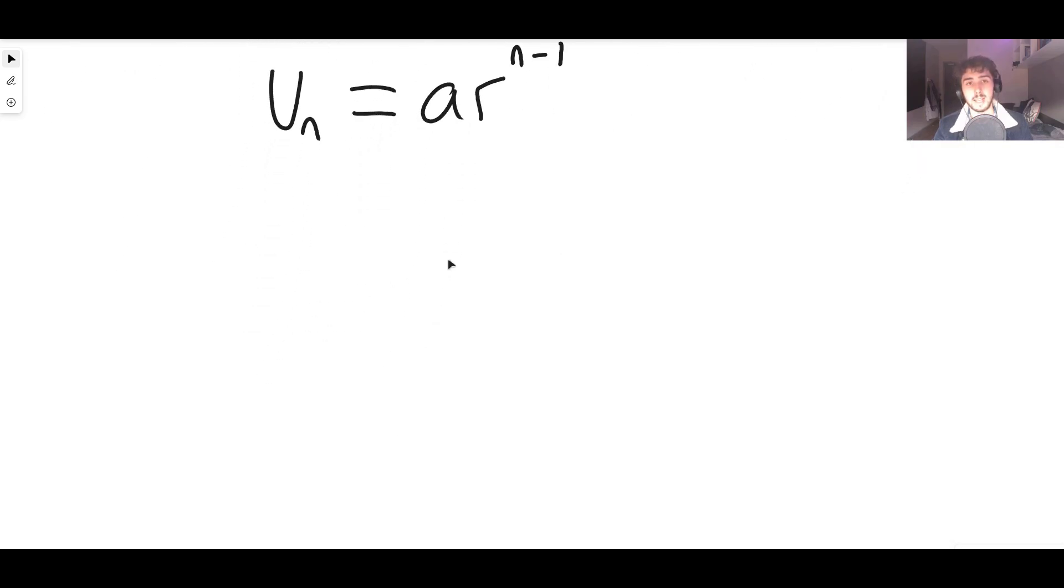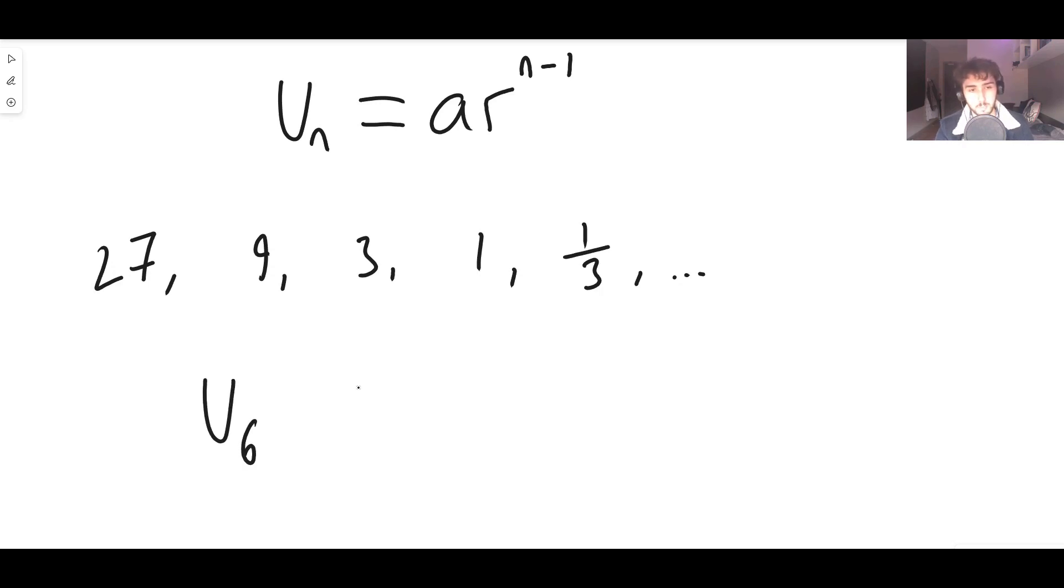So for example, let's say that we wanted to figure out in the second sequence that we did, which was, again, 27, 9, 3, 1, 1 third, etc. Let's say I wanted to know what the sixth term was. We should expect it to be a ninth. But let's test it out.